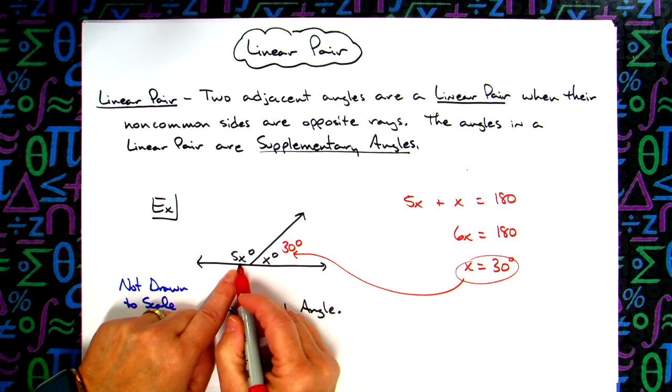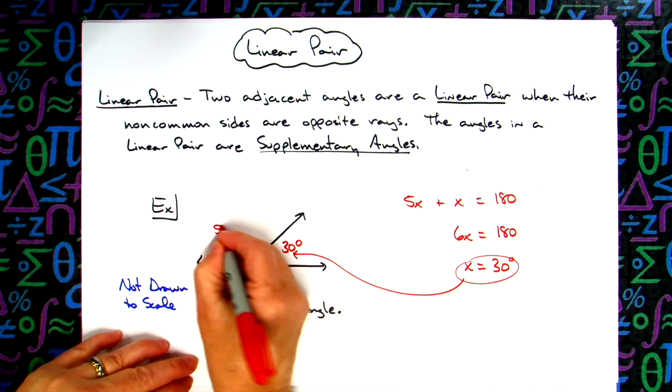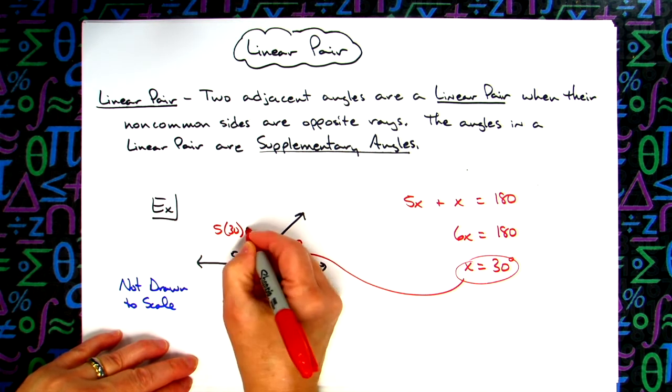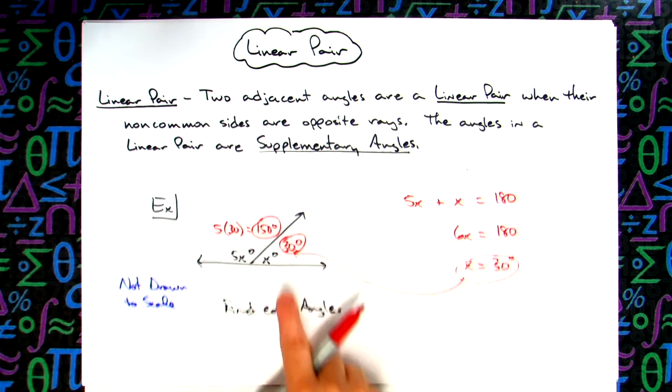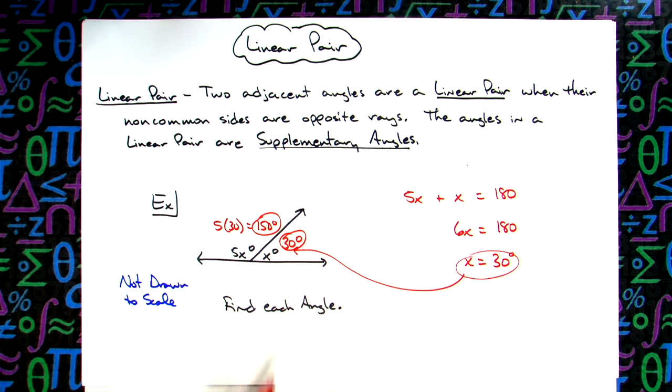If x is 30, right here we would have 5 times 30, which makes this angle 150 degrees. So we've got 30 degrees for this angle, 150 degrees for this angle.